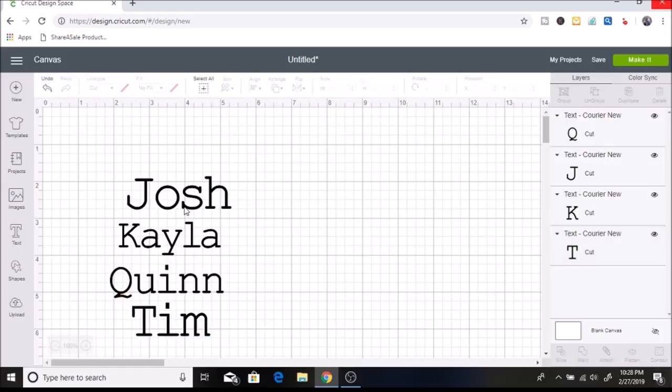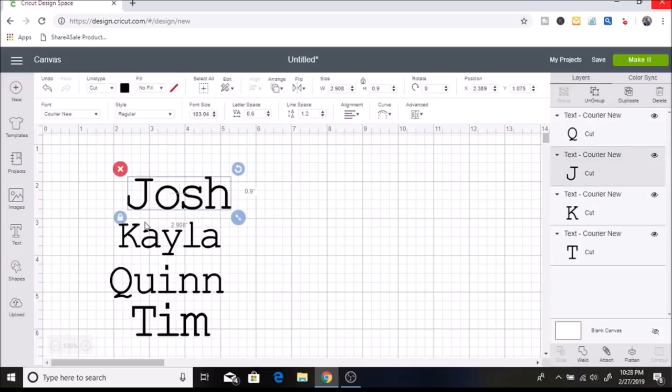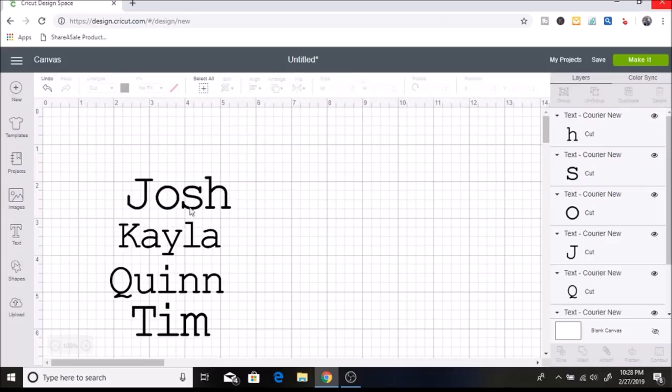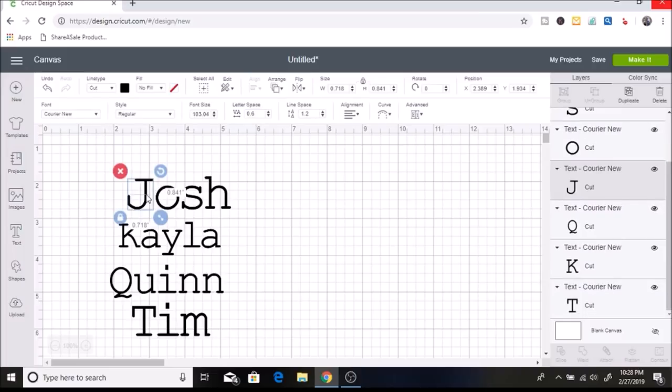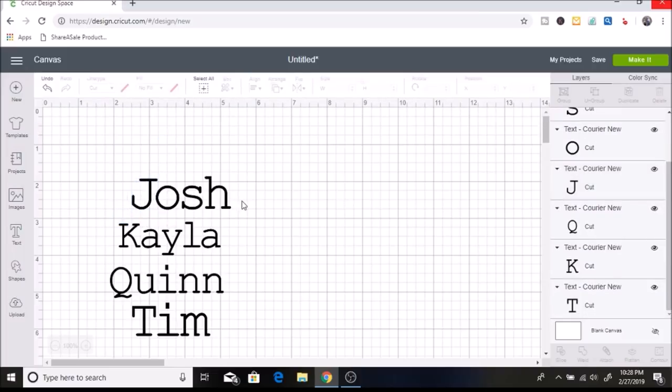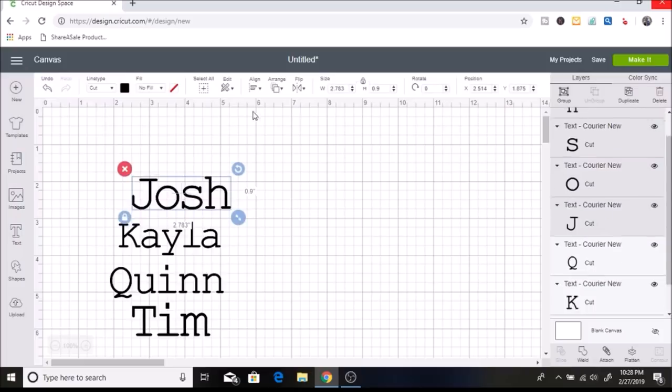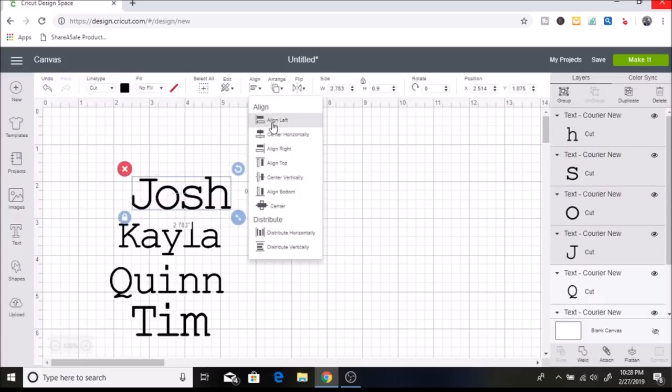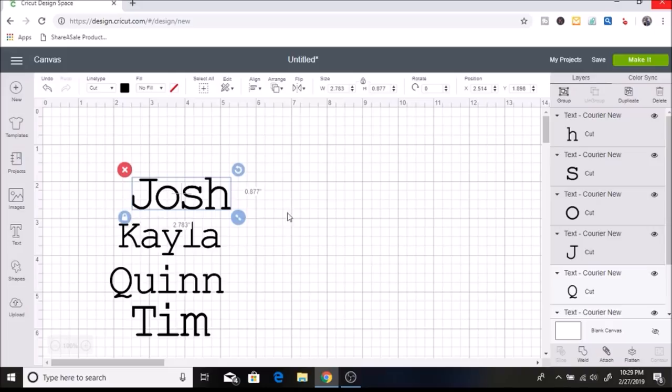I brought those in and for some reason I just feel like this J just looks like it is further apart than the O, S, and H. So I am going to ungroup this and I am just going to move my J a little bit closer. And then I am just going to select all and I might just go to align and click align to bottom. Just to make sure it is all lined up. I am just going to select these and I am just going to attach those.